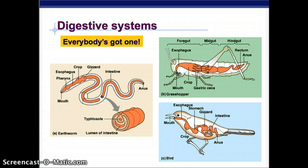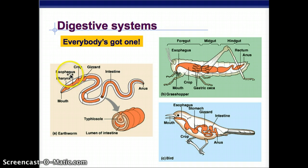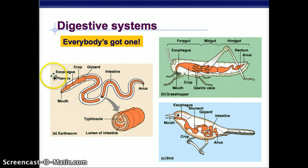Digestive systems — everybody's got one. You can see on all of these, they have very complicated systems. Mouth, pharynx, esophagus, crop, gizzard, intestine, typhlosole — they have all of these different parts. That whole thing is what it takes to digest food for a little earthworm. It's also the same for the bird and grasshopper.